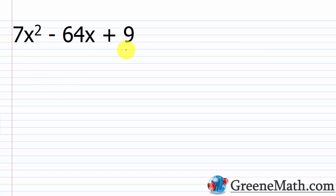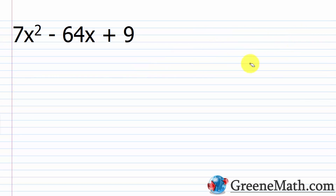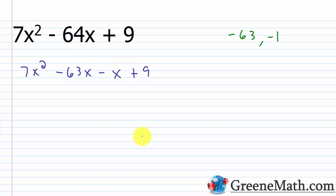To do the AC method, we find two integers with a product of A times C and a sum of B. Here A is 7, B is negative 64, and C is 9. A times C is 7 times 9, which is 63. We want a product of 63 and a sum of negative 64. That gives us negative 63 and negative 1. We use these two integers to rewrite the middle term: 7x² - 63x - x + 9.